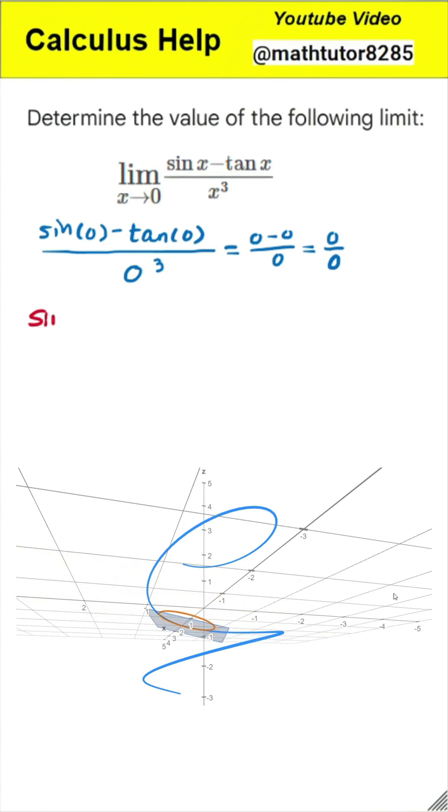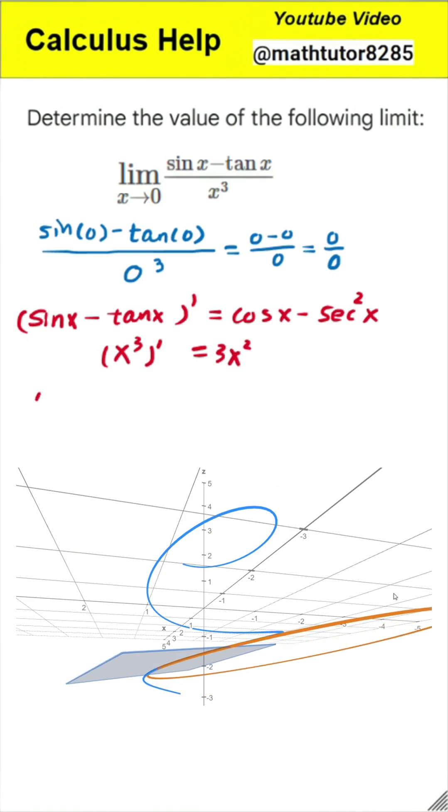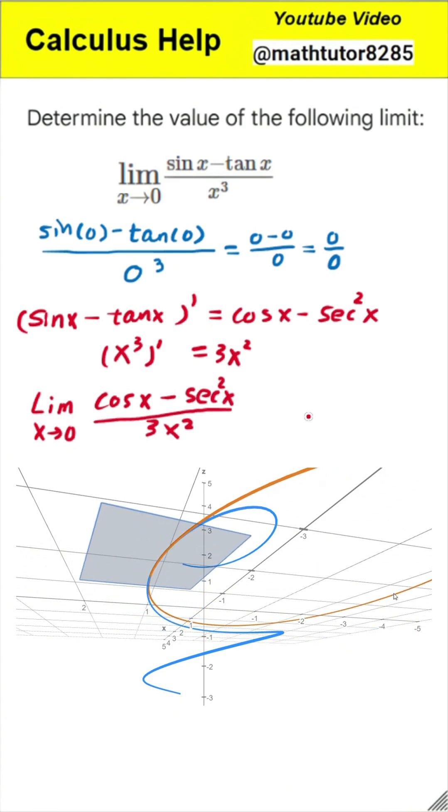Next step, first application of L'Hopital's rule. Now we apply L'Hopital's rule. We take the derivative of the top and the bottom separately. The derivative of the numerator, sine of x minus tangent of x, is cosine of x minus secant squared of x. The derivative of the denominator, x cubed, is 3 times x squared.